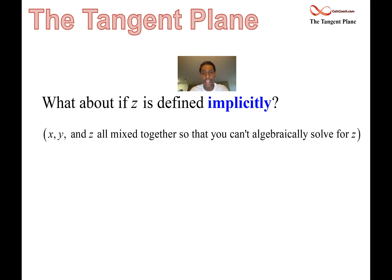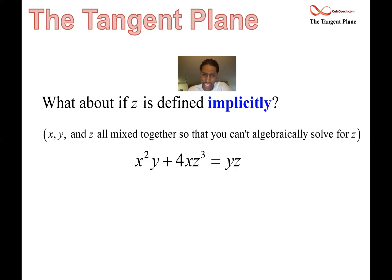What that means is that x, y, and z are all mixed in together, so there's no way to algebraically isolate z and have it equal to a function of x and y. But you can still study the function, measure the change in the function, and find the equation of the tangent plane. Here's an example: x²y + 4xz³ = yz. This is an implicitly defined function where z is a function of x and y, and we'll be interested in finding the equation of the tangent plane at a particular point.